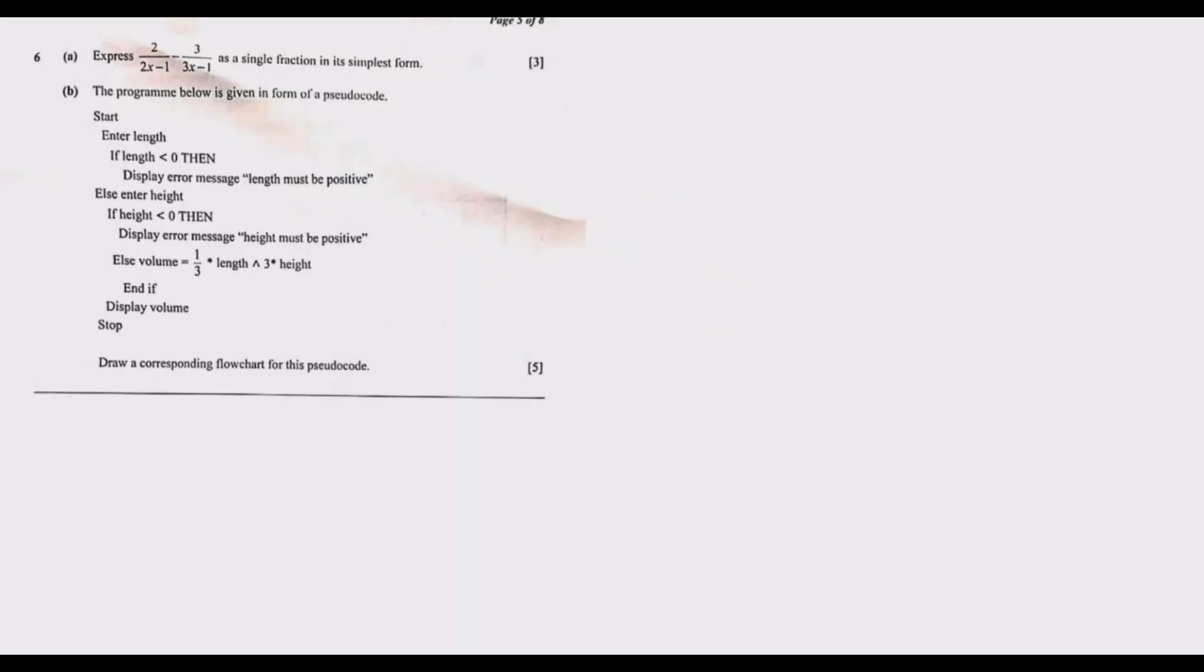Welcome to today's episode, episode six, where we're looking at question number six of the 2021 G12 GCE mathematics paper one. Our question of interest is 2 over (2x minus 1) minus 3 over (3x minus 1). We need to express this as a single fraction in its simplest form.